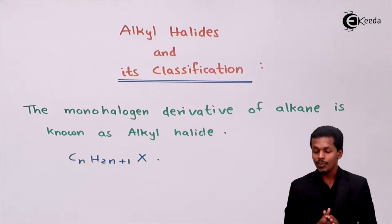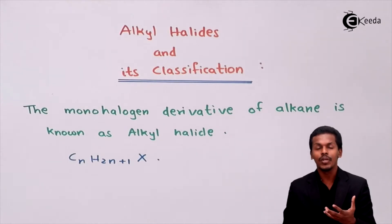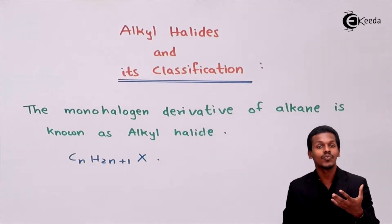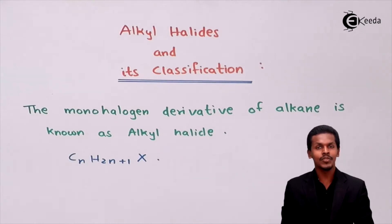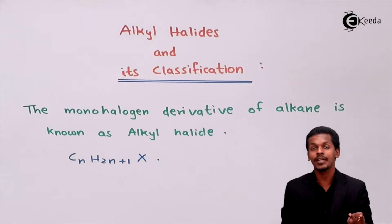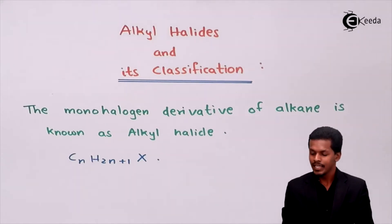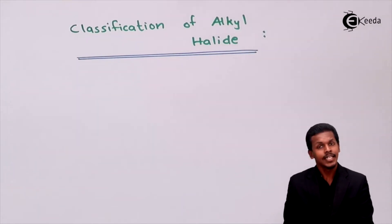Now let us talk about the classification of alkyl halides. The classification of alkyl halides is based upon the halogen atom — that is, to which type of carbon atom the halogen is attached. As we have studied, there are types of carbon atoms: primary, secondary, tertiary, and quaternary.